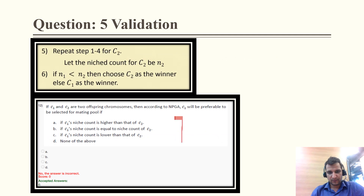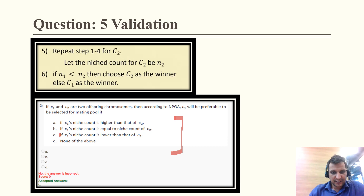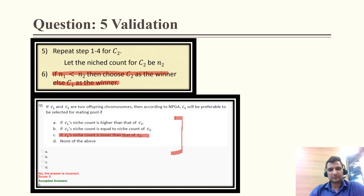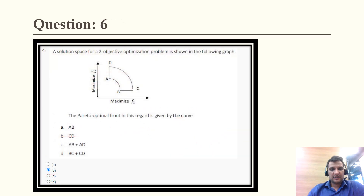For validation, this same question was asked in a previous year, and the accepted answer is C — that C1's niche count is lower than that of C2. This is also supported by the slides: if niche count of solution 1 is lower than solution 2, then solution 1 is the winner.